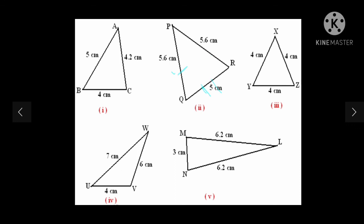Now the fourth one where UW is 7 cm, side UV is 4 cm, and VW is 6 cm, what kind of angle is it? It is a scalene triangle, why? Because all the sides are not equal, they have different lengths. Now the fifth one - MNL or you can say LMN - what triangle is this? Here LM is 6.2, LN is 6.2. It means both the sides are equal and one side is different, so it is your isosceles triangle. Understood students?